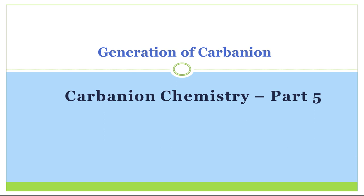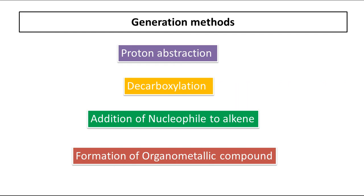Hello everyone, carbanion chemistry part 5. I will discuss generation of carbanions. In the previous parts 1 to 4, you will get an introductory idea of carbanion stability, hybridization, structures. All these videos are in the carbanion chemistry playlist, link given in the description box. So let's start: generation methods for carbanions. There are total four methods: proton abstraction, decarboxylation, addition of nucleophile to alkene, and formation of organometallic compounds.